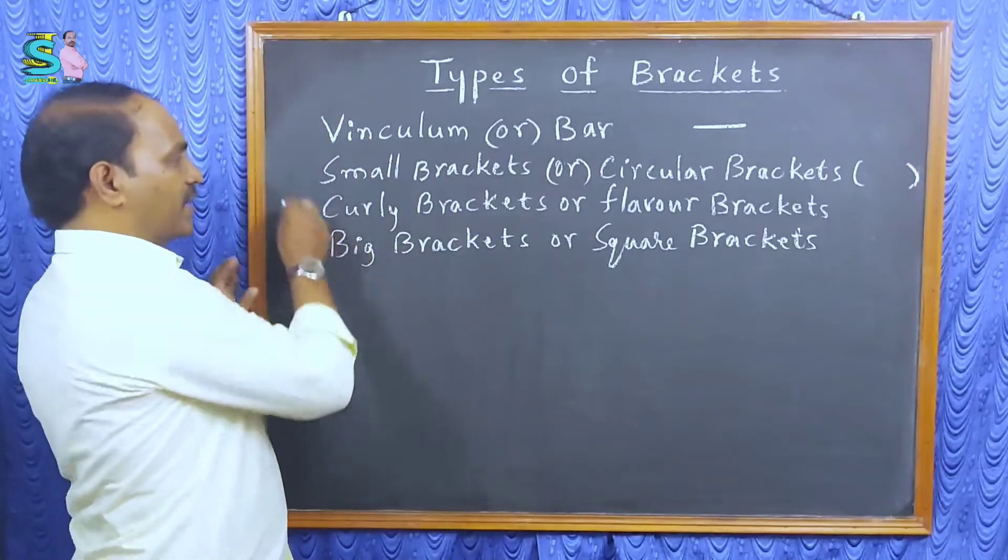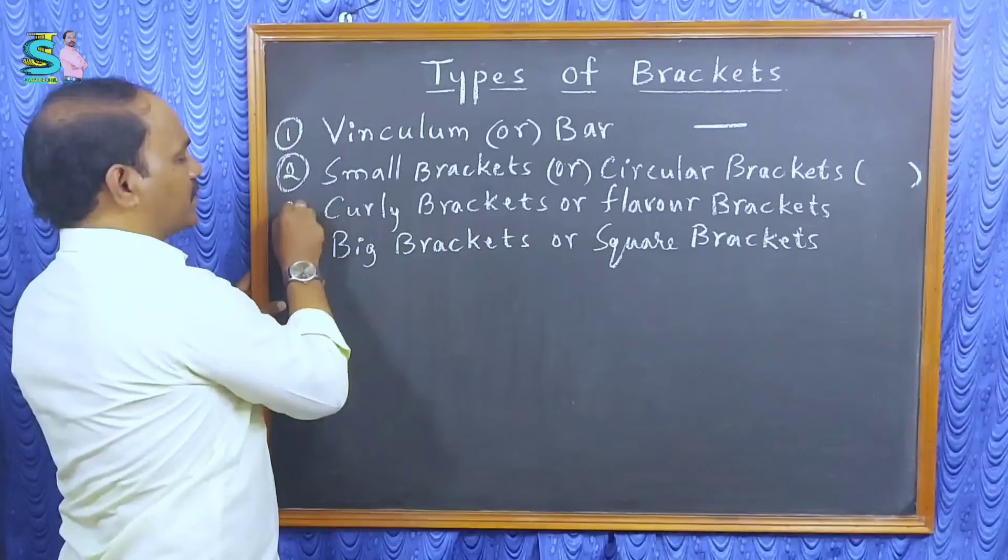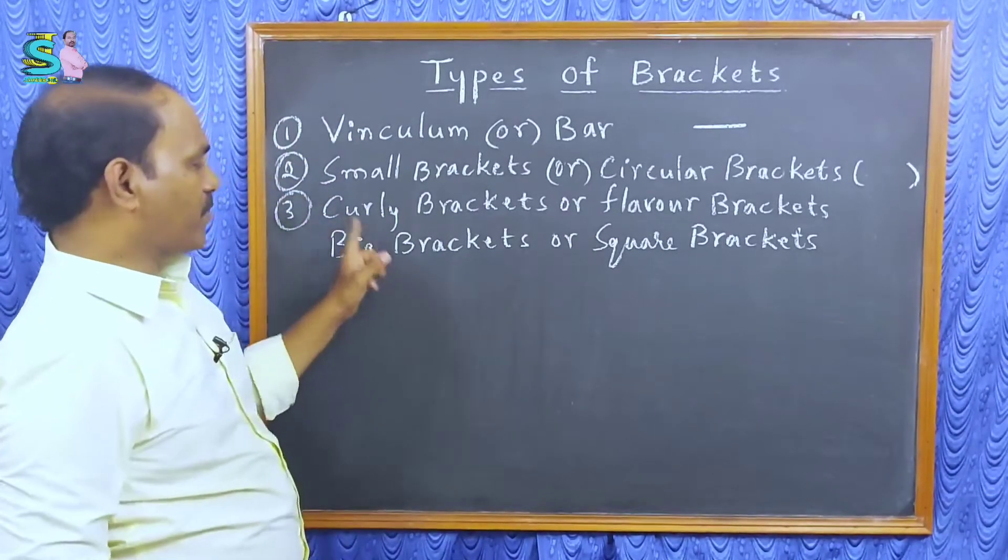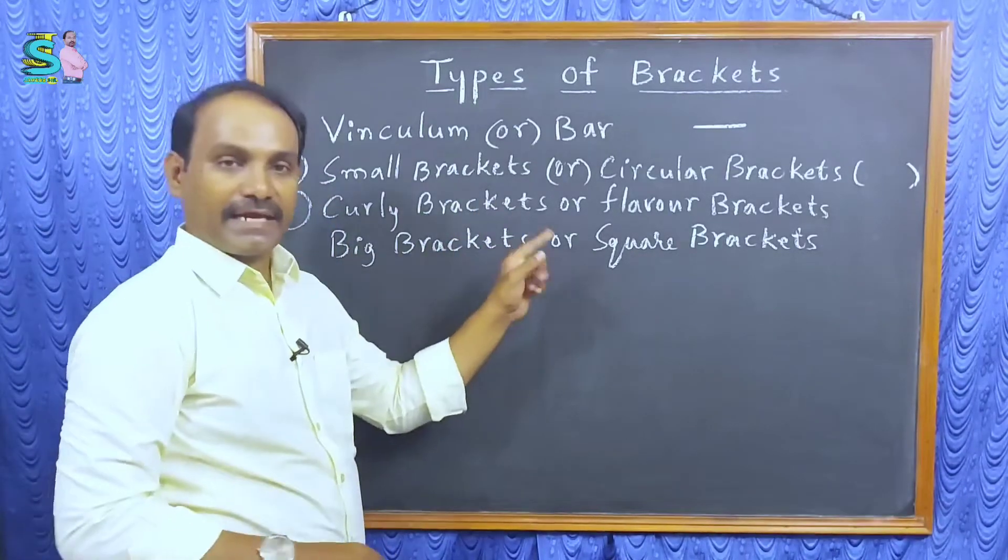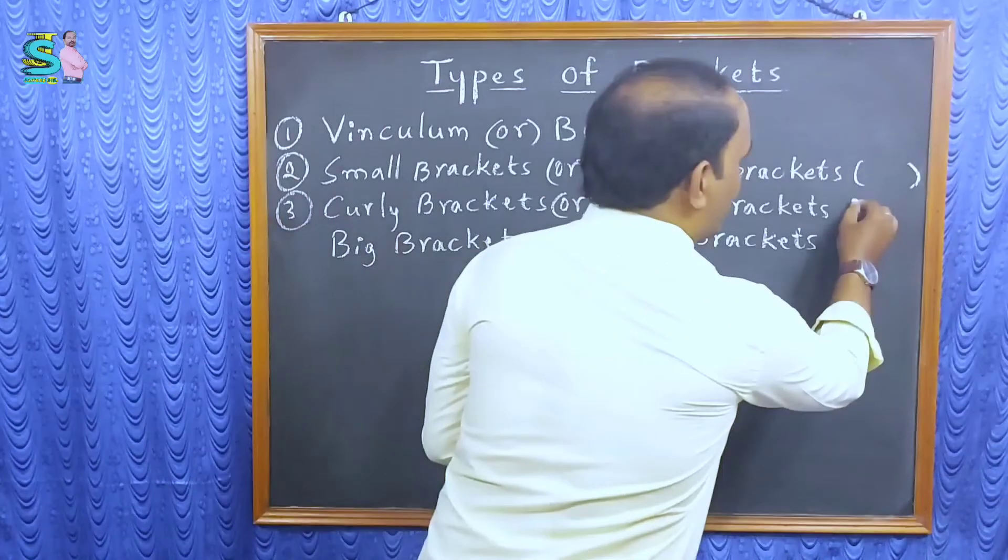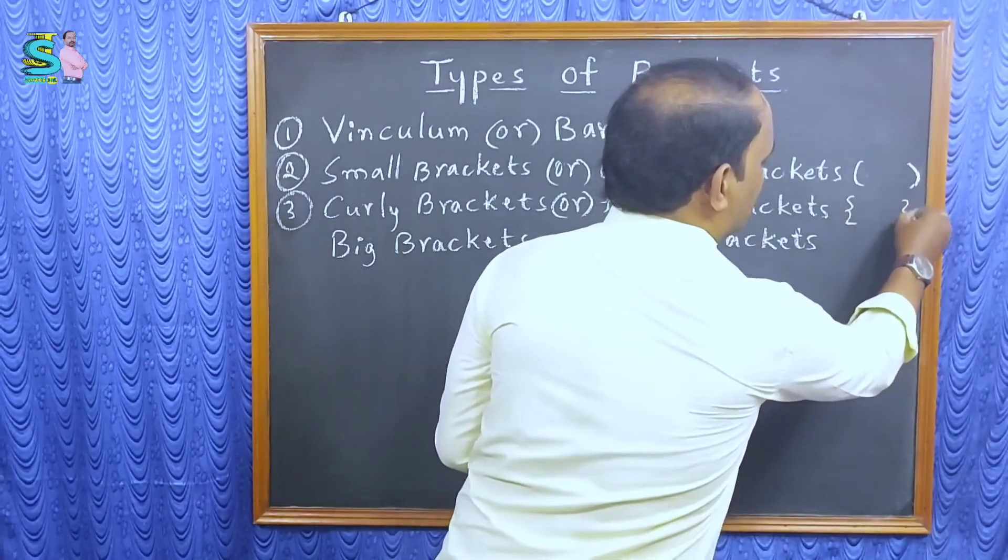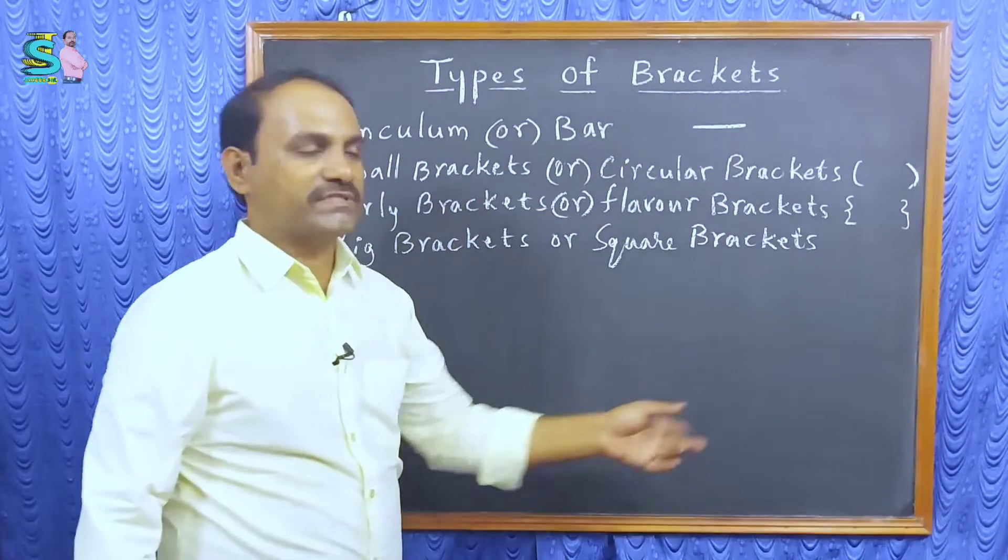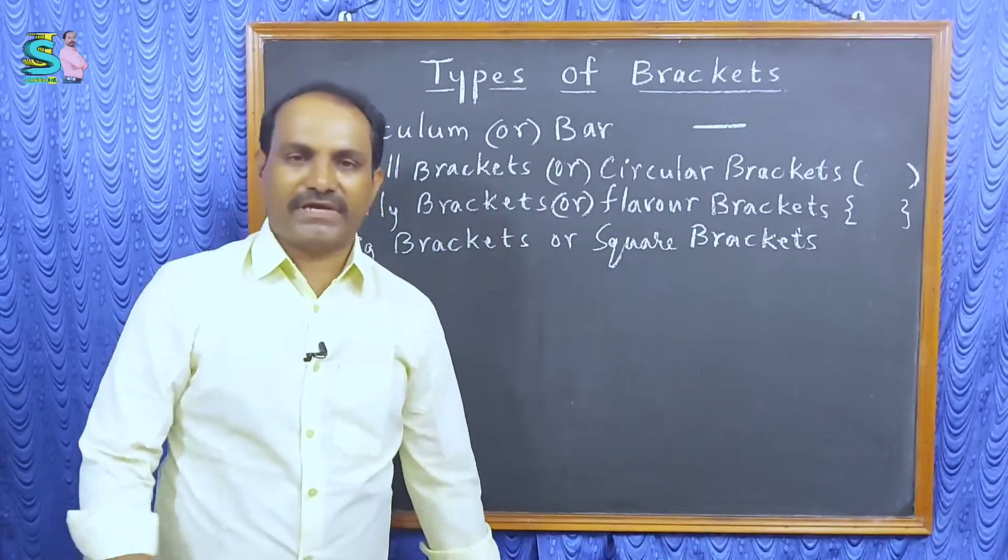Third one, third type of brackets are curly brackets or flower brackets. We indicate the sets by using these brackets.